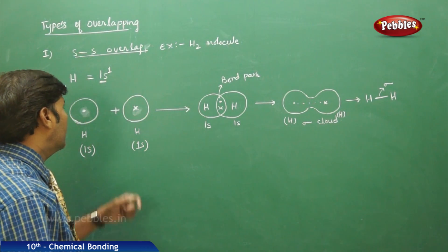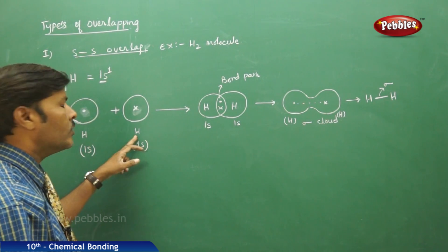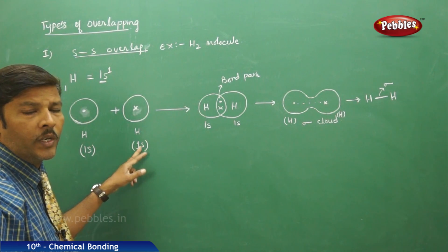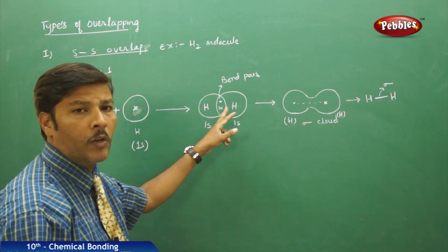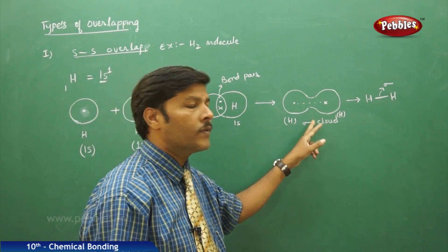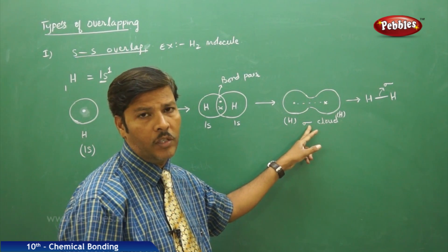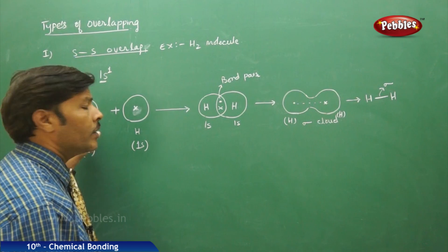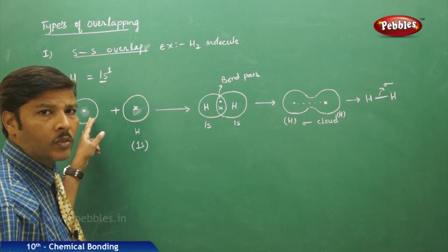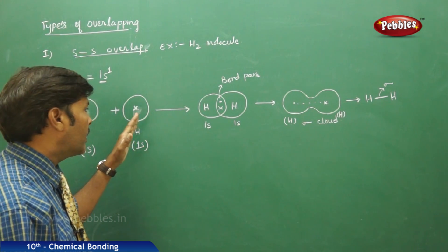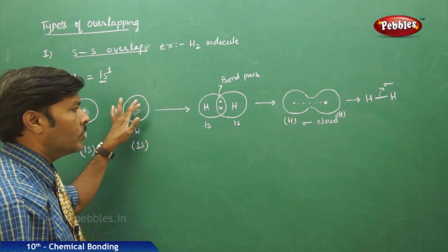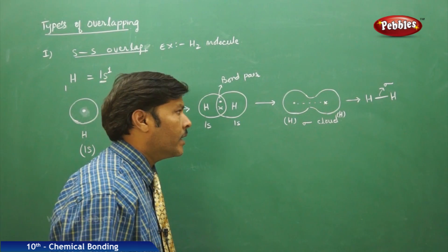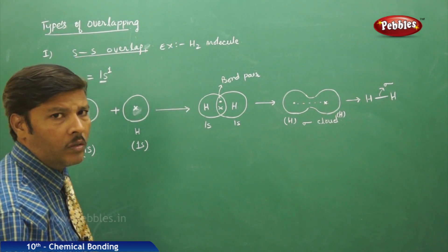One important point here: during s-to-s orbital overlapping of the two hydrogen atoms, the sigma bond formed is non-directional. This is because the s atomic orbital is spherical in shape and has a uniform plane of symmetry — the electron cloud density is uniform in all directions. You cannot differentiate the electron cloud into a particular axis or direction. Because electron density is uniform, the sigma bond formed is non-directional, and that is why this is a special type of overlapping resulting in a very strong bond.